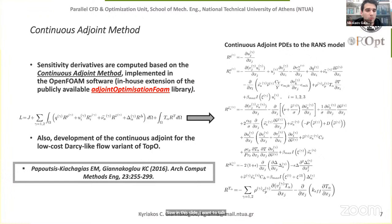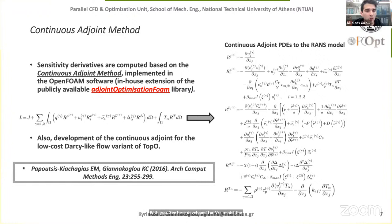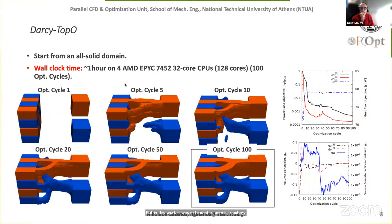Continuous adjoint is used to compute sensitivity derivatives of the objective and constraints with respect to design variables. We developed continuous adjoint PDEs for both the RANS model and the low-cost Darcy-like variant of topology optimization. The continuous adjoint is implemented in the adjoint optimization library of OpenFOAM, which is publicly available from our group, and was extended in this work to permit topology optimization with two fluids and conjugate heat transfer.